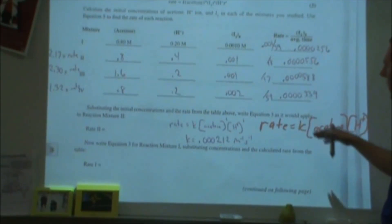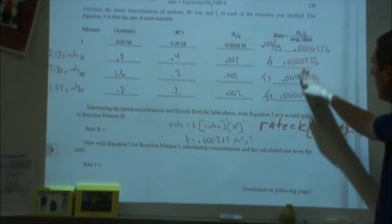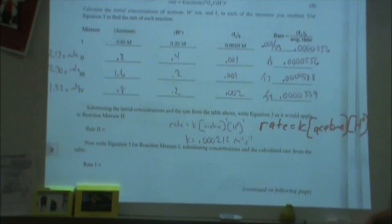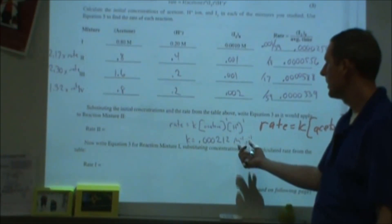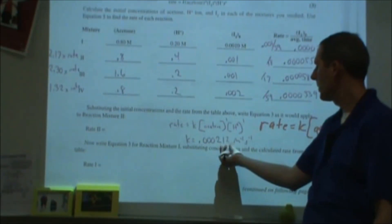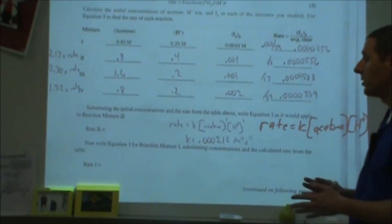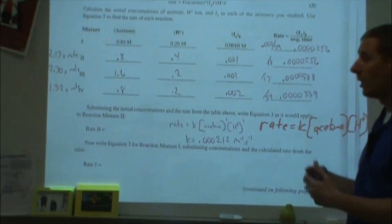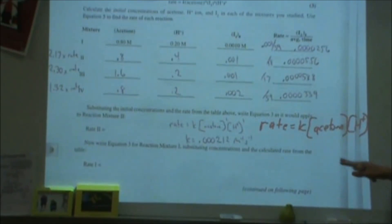You can plug in the values for acetone concentration, H⁺ concentration, and the rate in molarity per second, then solve for the rate constant k. For one of these experiments, I calculated k = 2.12×10⁻⁴ M⁻¹s⁻¹.